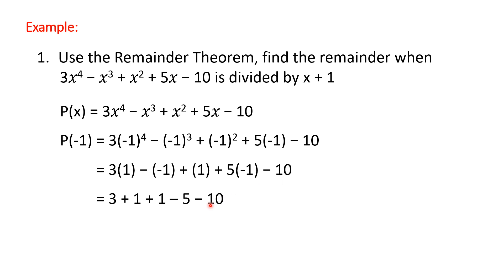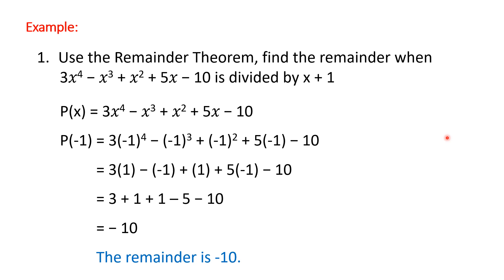Copy the -10, then we add all the numbers. So 3 + 1 + 1 = 5, minus 5 is 0, minus 10 is -10. So -10 is our remainder. After dividing this expression by (x + 1), our remainder is -10.